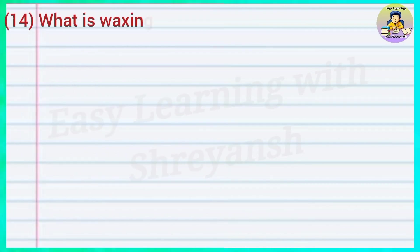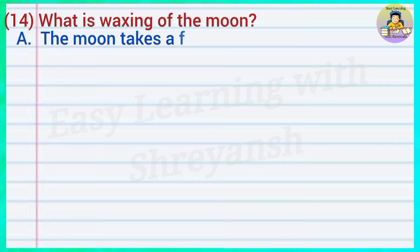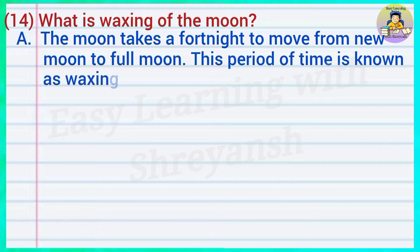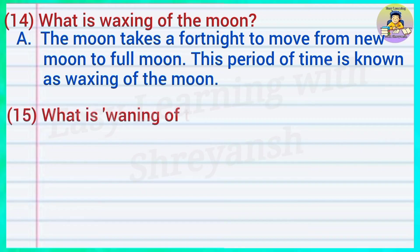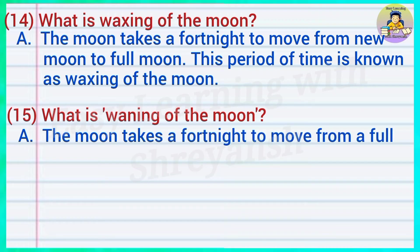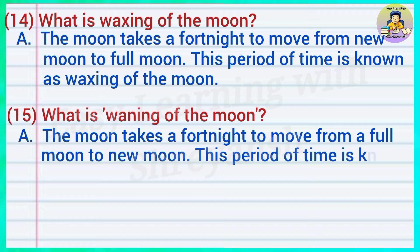Fourteen — what is the waxing of the moon? Answer: The moon takes a fortnight to move from new moon to full moon; this period of time is known as the waxing of the moon. Fifteen — what is the waning of the moon? Answer: The moon takes a fortnight to move from full moon to new moon; this period of time is known as the waning of the moon.